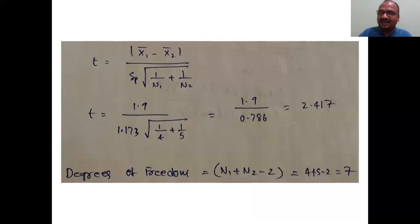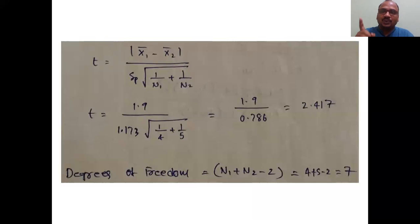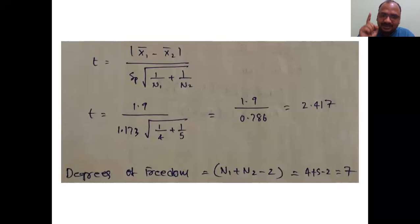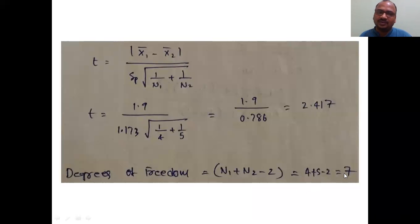Now calculate the degrees of freedom. For Type 1 and Type 2 it is n − 1, but for Type 3 it is n₁ + n₂ − 2. So degrees of freedom = 4 + 5 − 2 = 7. This is the obtained t-value; now we look up the standard table t-value.